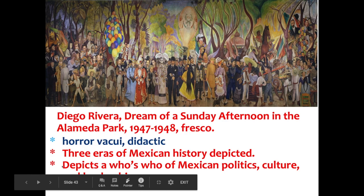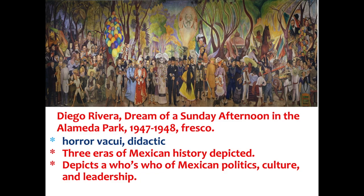The mural moves through Mexican history from right to left, depicting a who's who of Mexican politics, culture, and leadership. You have Sor Juana in a nun's habit at the left center, Benito Juárez — a five-term president of Mexico — at the left, and Emperor Maximilian and Empress Carlota representing the imperial period at the top. Rivera himself appears in the center at age 10, holding hands with La Catrina — the personification of death — and dreaming of perfect love. Frida Kahlo is behind him holding a yin and yang symbol.